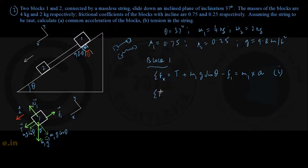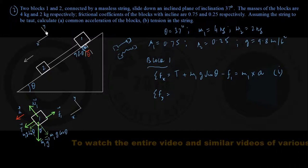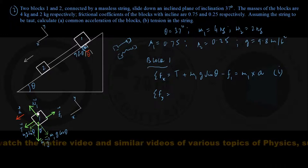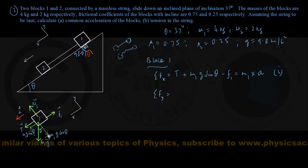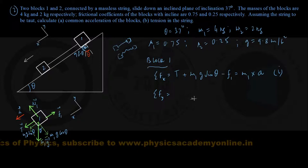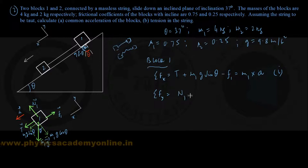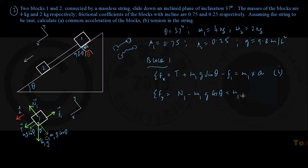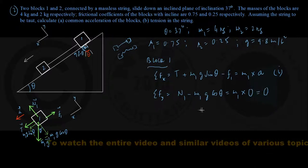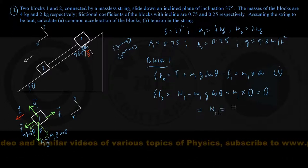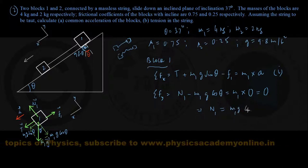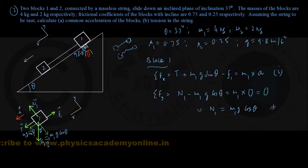For the y-direction (perpendicular to the incline), as the block moves down the incline it has no motion in the y-direction. The forces are N1 in the plus-y direction and M1g cos θ in the minus-y direction. The equation of motion gives N1 − M1g cos θ = M1 × 0 = 0, so the normal force N1 = M1g cos θ. That is equation number 2.